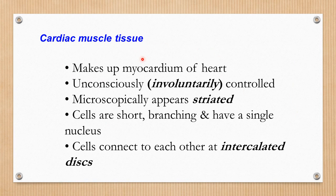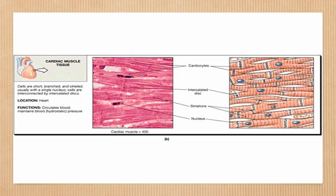The cardiac muscles mainly make up the myocardium of the heart. These are involuntary muscles, not under conscious control of the human body, so they are controlled by the autonomic nervous system. They also appear striated because of cross striations. But these muscles are short, branching, and have a single nucleus. A very important feature is the intercalated discs, which are gap junctions. You can see in the picture these short branching muscle fibers with centrally located nucleus.